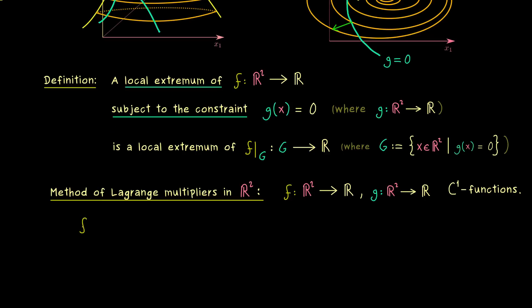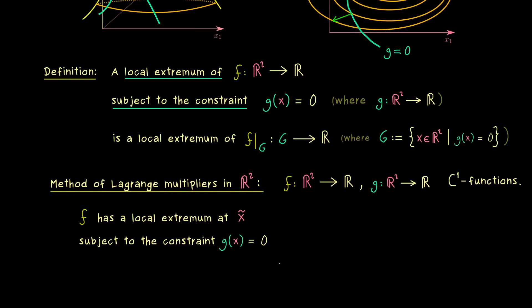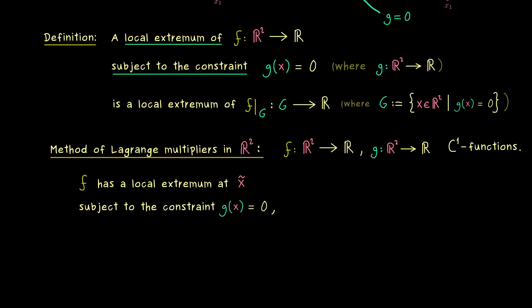So as before, we will formulate that with an implication. The point where we find the local extremum, we will call x̃ again. However, here please don't forget that x̃ has to lie on the constraint, so we have that g(x̃) = 0 as well. So now this means that we have a local extremum under the constraint at the point x̃.